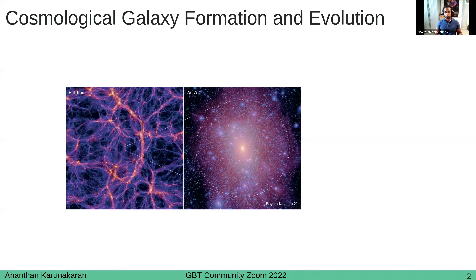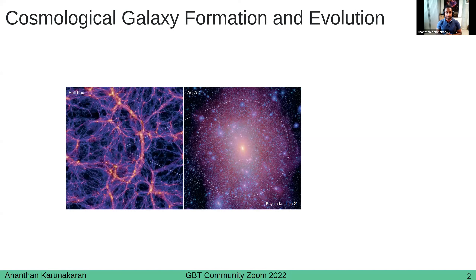The first thing I wanted to provide is some background and motivation. Starting with cosmological galaxy formation and evolution: the slide here shows two panels. The one on the left shows a 2D slice of the full volume from the Aquarius simulation suite, a high-resolution large cosmological volume simulation. Darker regions show areas of low-density dark matter, while brighter orange and yellow regions show high-density areas. You can see the large filamentary structure — the large-scale structure we expect from simulations, which matches our observations quite well.